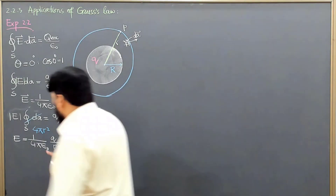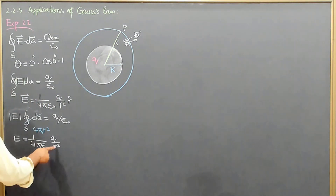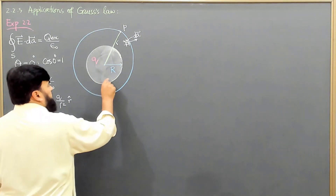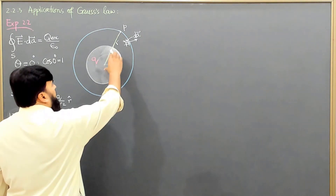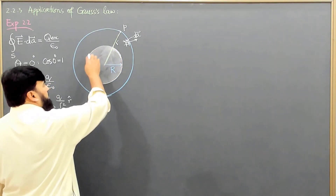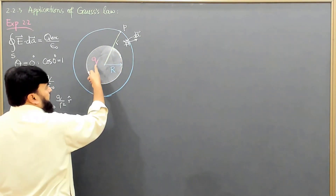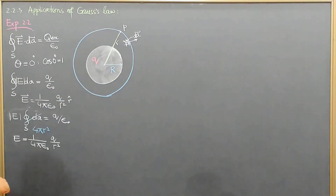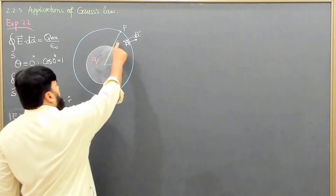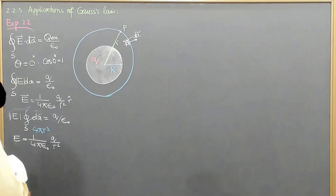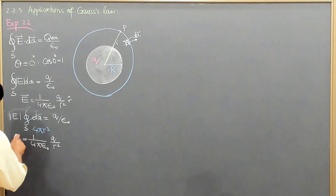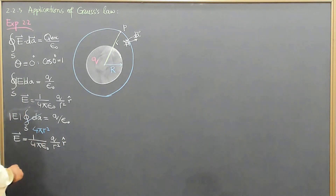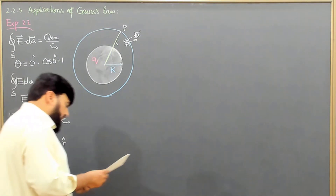So here E comes out to be 1 over 4π ε₀ r², and this means whether you enclose a big sphere with charge Q or a point charge with charge Q, the electric field at distance r will be the same. In vector form, this is radially outward because at each point the field is radially outward.